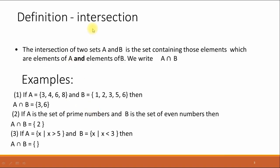Now, intersection of two sets. What is the intersection of two sets? The intersection of two sets A and B is the set containing those elements which are elements of A and elements of B, and we write A intersection B. For example, if A contains the elements 3, 4, 6, and 8, and set B contains the elements 1, 2, 3, 5, and 6, then intersection of A and B contains the elements 3 and 6, since 3 and 6 are common elements of both sets.